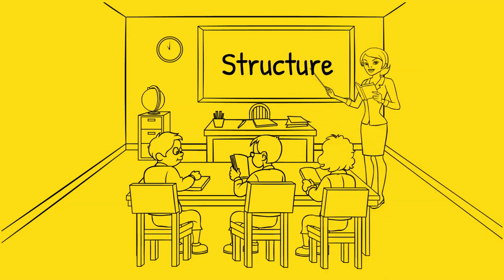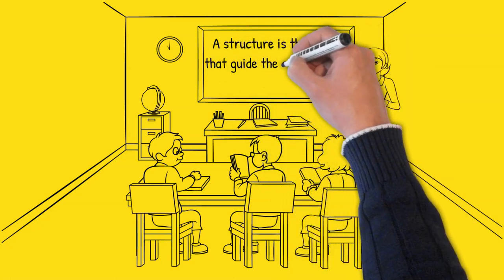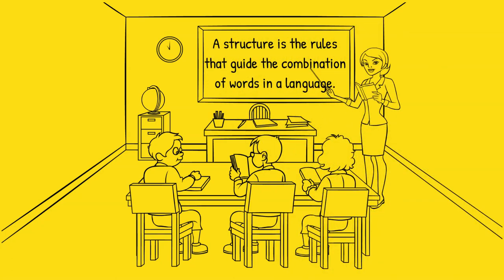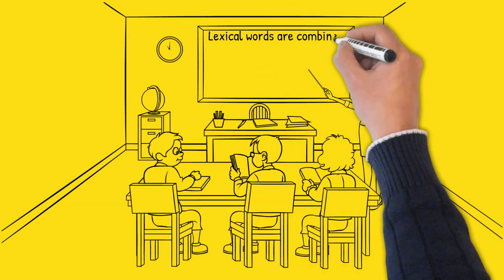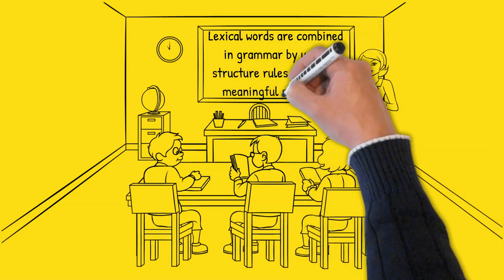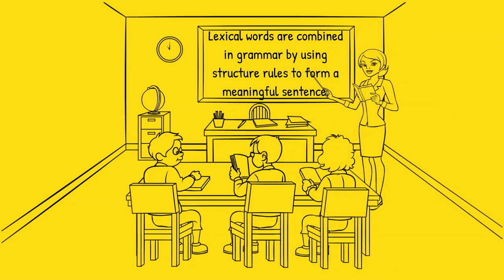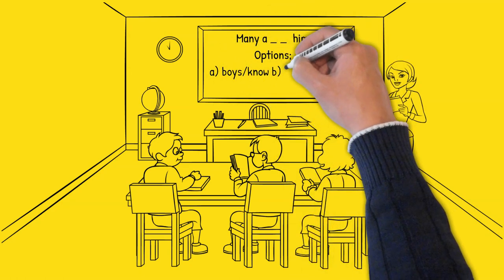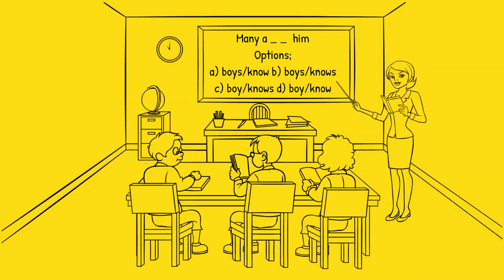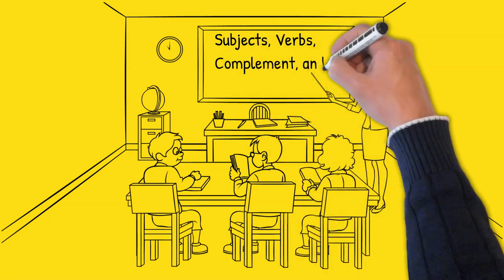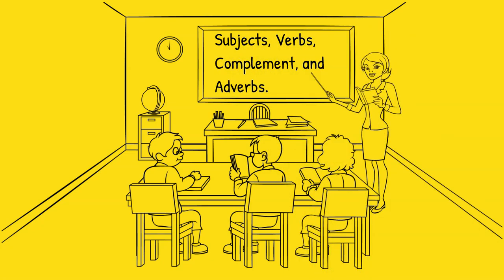Structure: In English grammar, a structure is the rules that guide the combination of words in a language. These rules guide writers when writing so that the combination of words can be meaningful. Lexical words are combined in grammar by using structure rules to form a meaningful sentence. For example, to analyze a question, we need to check if the sentence contains the four elements: subject, verb, complement, and adverb.